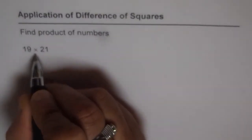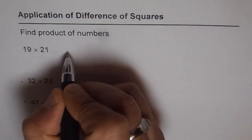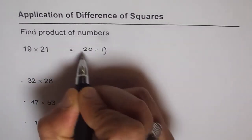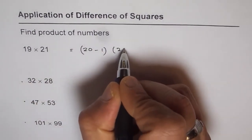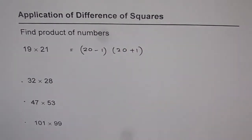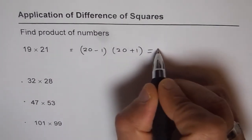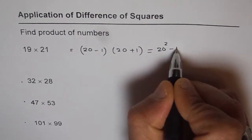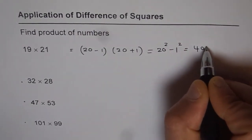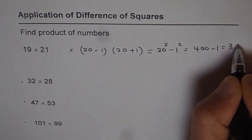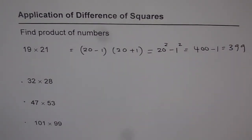So here is how we do it. 19 times 21: 19 can be written as 20 minus 1, and 21 can be written as 20 plus 1. That is the familiar product of a difference and a sum, so we can write this as 20 squared minus 1 squared, which is 400 minus 1, giving us 399. See how simple it is — within no time you can get the product of large numbers using this technique.